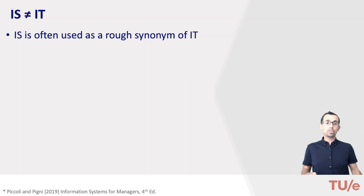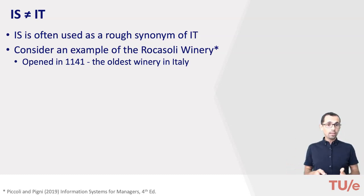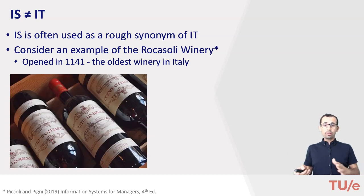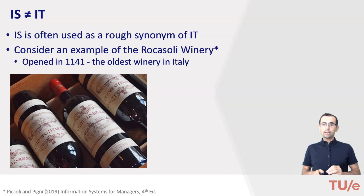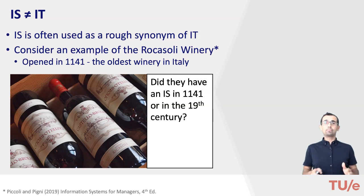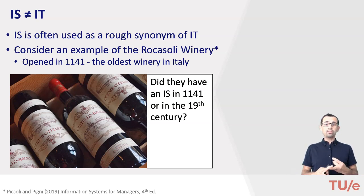This is an example I really liked when I saw it in a book. The Ricassoli winery is the oldest family-owned winery in Italy, producing wine in the famous Chianti region. One of the family members, Baron Bettino Ricassoli, perfected the wine blend in 1872 after user studies and experiments. Now the question is: did the Ricassoli winery have an information system when Baron Bettino perfected the Chianti recipe? The answer is yes, of course.